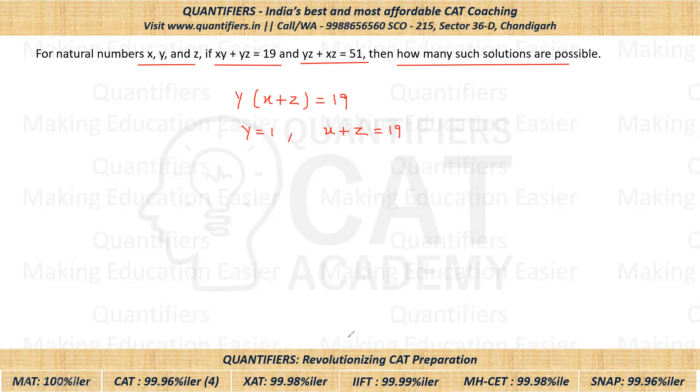Now students, if I use the second equation, you can see z is common, right? z is common. I'll get z times (x plus y) equals 51. Now look here, we know y is 1.